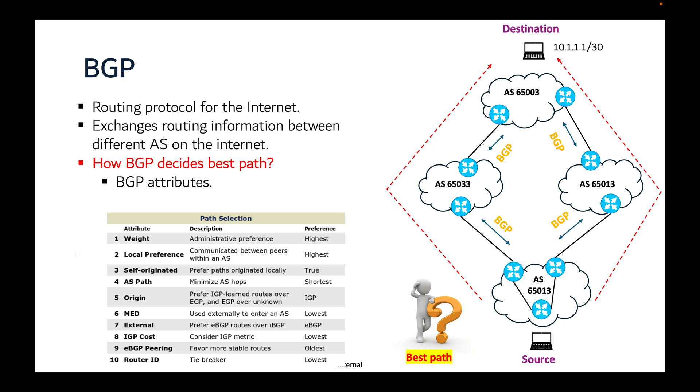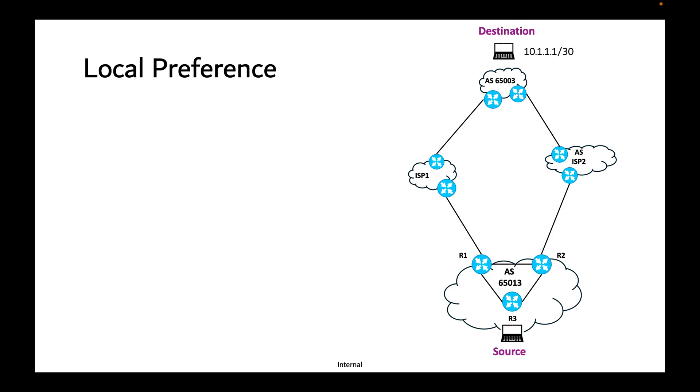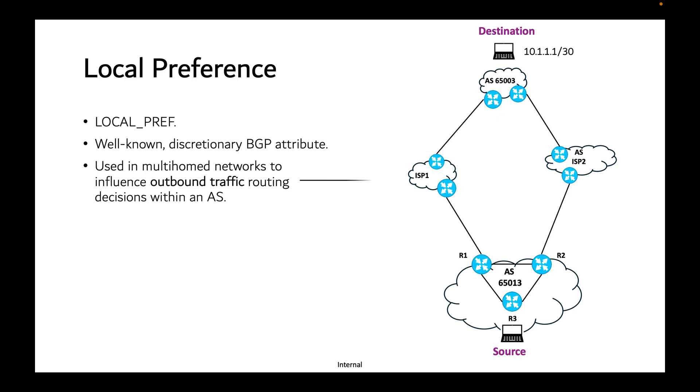BGP local preference, also known as local pref, is a well-known discretionary BGP attribute. It is used in multi-homed networks to influence outbound routing decisions within the autonomous system. In autonomous system 65013, there are two exit points, R1 and R2. The source in this AS will choose based on local preference.